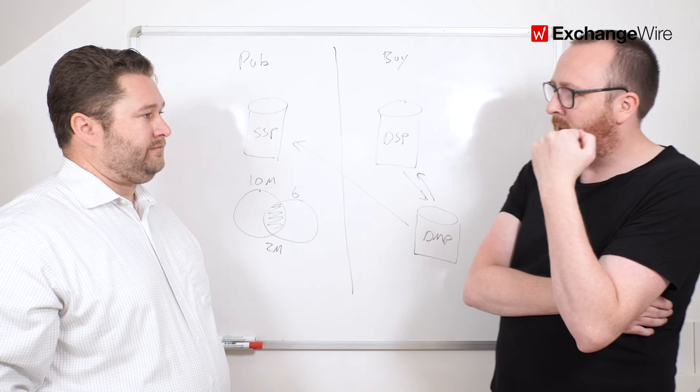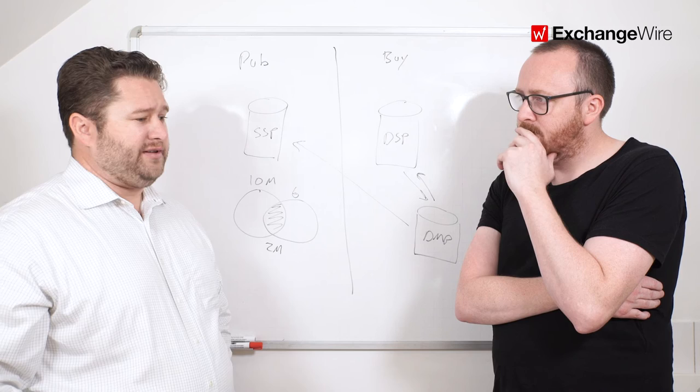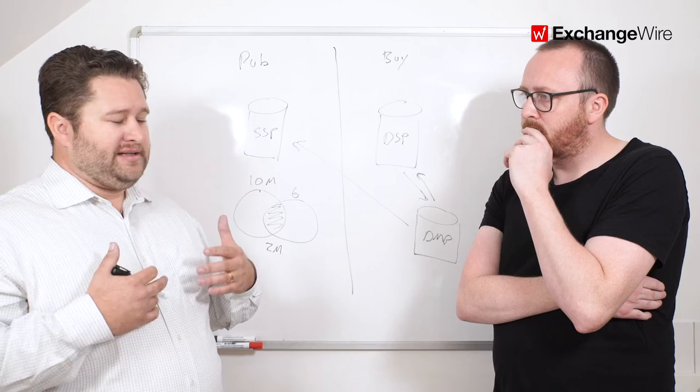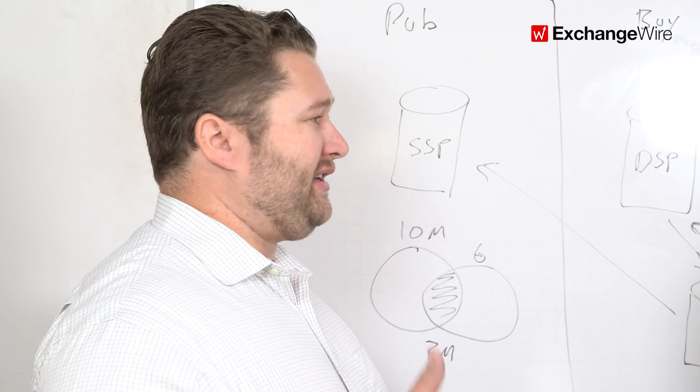And the value of publishers getting guaranteed spend and the ability to sort of get more programmatic spend. So right now you'll often see when you go in and study a publisher's ad server that they are willing to make discounts for large committed budgets. So you'll often see the highest line items are not necessarily the highest CPMs.